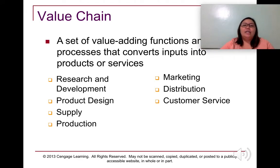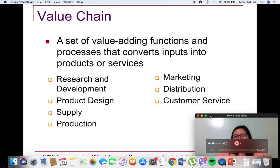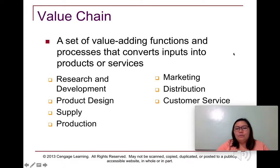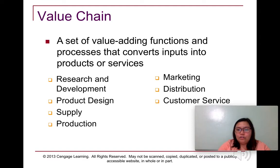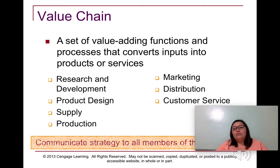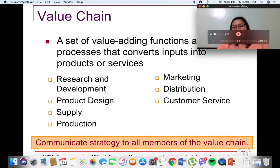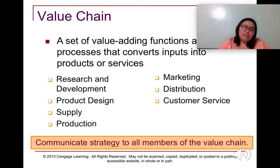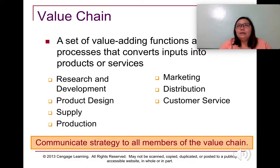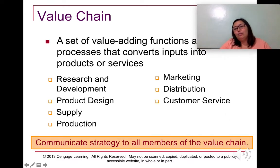Next, we have the value chain — a set of value-adding functions and processes that converts inputs into products or services. Our value chain starts with research and development, product design, supply, production, marketing, distribution, all the way down to customer service. It is very important to communicate the strategy you are implementing to all members of the value chain, because if they don't know your strategy, the actions of each process may clash. That is why we need goal congruence.